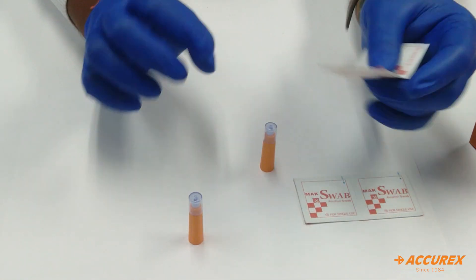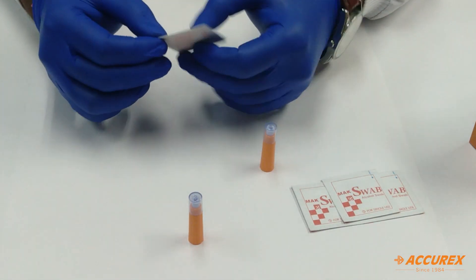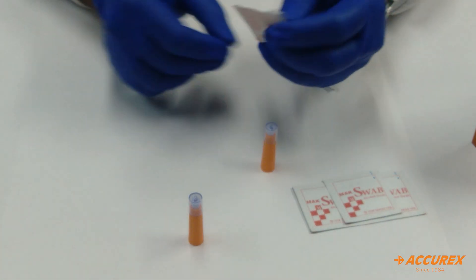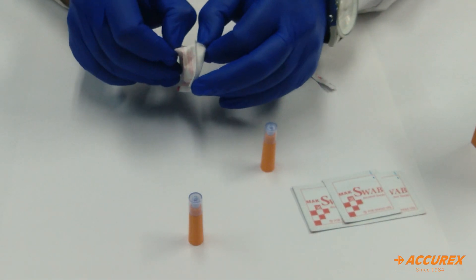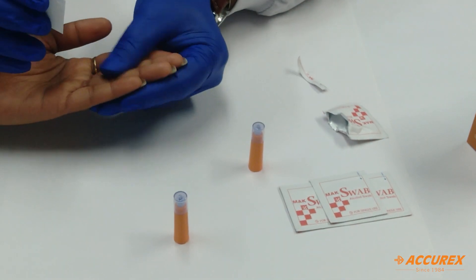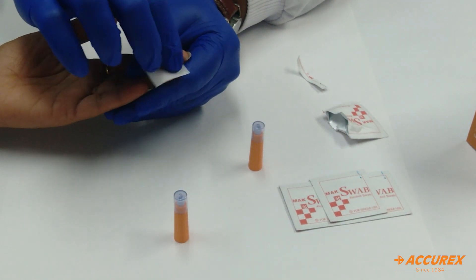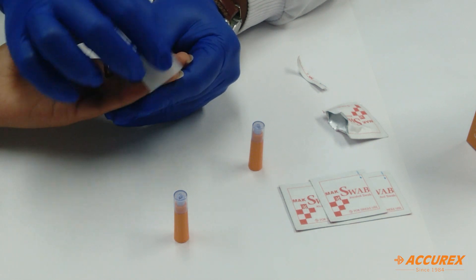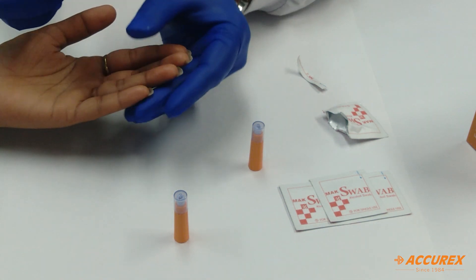This is an alcohol swab. First we need to clean the area where we need to prick with the alcohol swab. You can rub the skin with this alcohol swab properly. Allow it to dry.